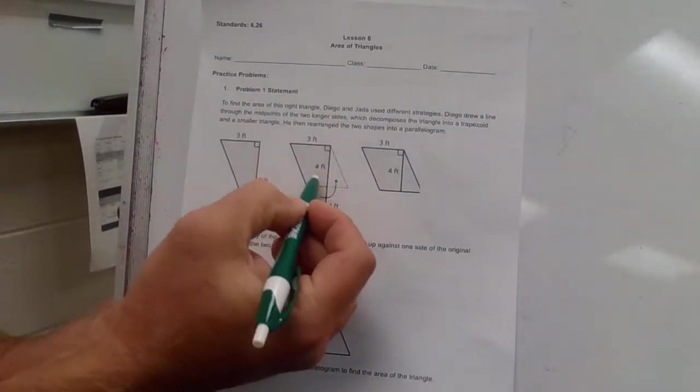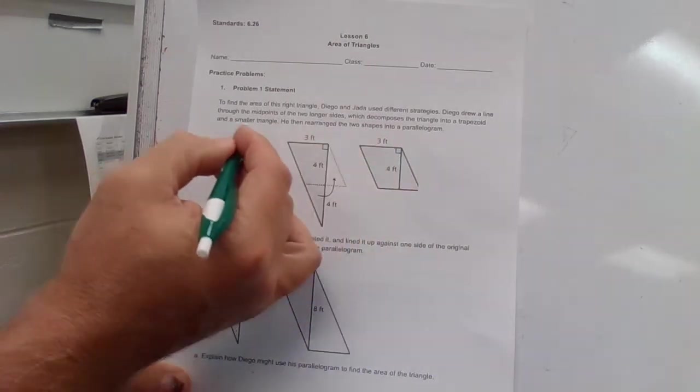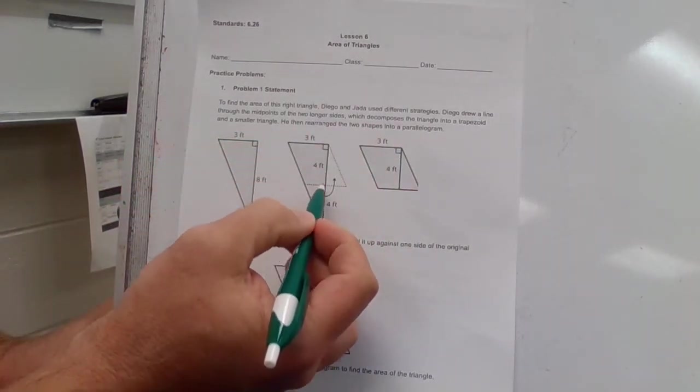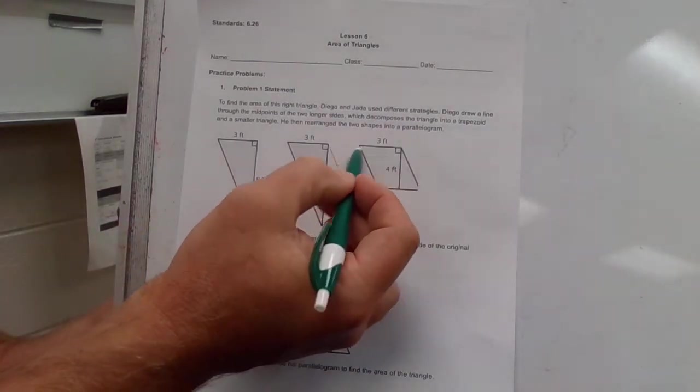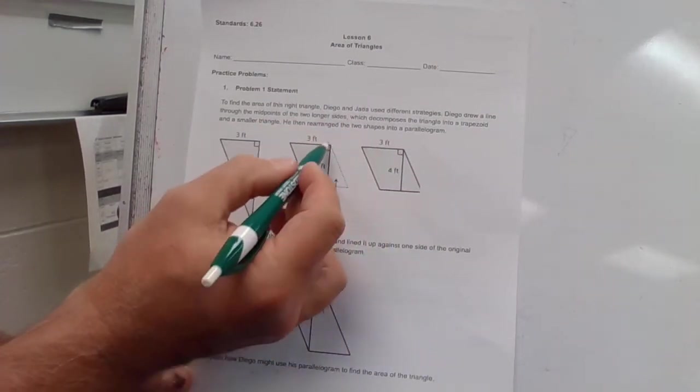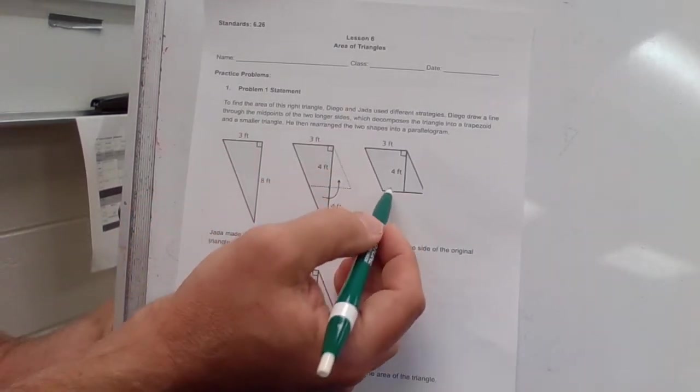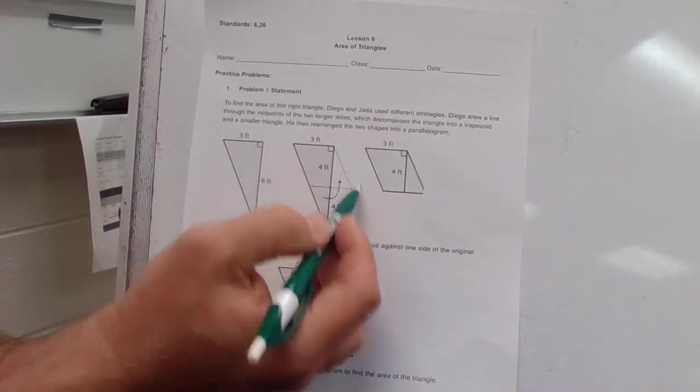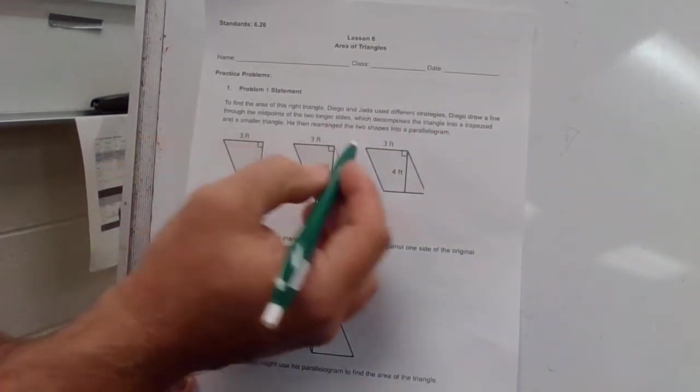This right here is your triangle. Here is what they're considering as the trapezoid, not the dotted lines, but here. Another way to view that is this right here. Triangle to a trapezoid and a smaller triangle. Here's your trapezoid, here's your triangle.